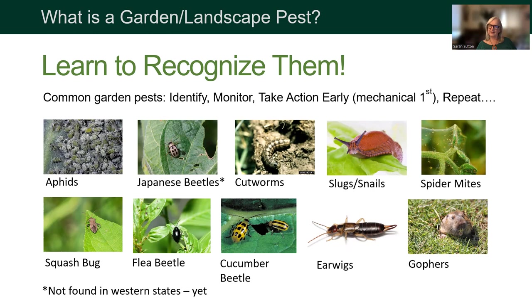Flea beetles can jump — if you see a little black shiny beetle that jumps off your plant, that might be what you have. Keep your garden clean and hose them off if needed. The cucumber beetle comes in two kinds and likes cucumbers and other cucumber family vegetables. They don't like heat and mostly come out at night. If it's a hot day they will be hiding, so keep your garden clean.